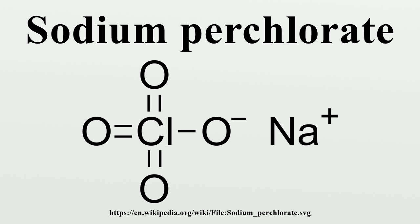Perchloric acid is made by treating NaClO4 with hydrogen chloride. NaClO4 finds only minimal use in pyrotechnics because it is hygroscopic; ammonium and potassium perchlorates are preferred. These salts are prepared by double decomposition from a solution of sodium perchlorate and potassium or ammonium chlorides.